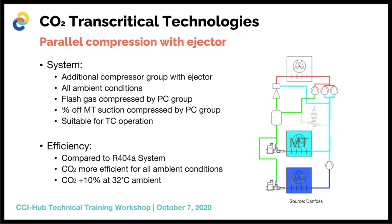The ejector effectively does free work, lifting medium temperature suction vapor into the receiver to be compressed at a higher suction pressure. With this technology, CO2 has been made energy efficient compared to any type of system and up to any ambient conditions, making it suitable for extreme high ambient conditions. At 32 degrees Celsius ambient, ten percent or more energy saving can be found compared to R404A, with even greater gains at lower ambient conditions.